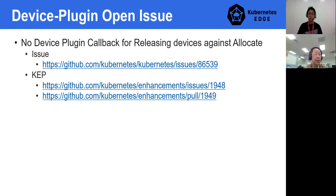Do we have everything we need for device plug-in? The answer is no. There is an open issue for device plug-in which originally comes from our use case. Edge devices are way more complicated — some devices are not as simple to manage with open/close but require more specific operations to release the resource. Device plug-in currently does not have such a callback interface to release the device resource, so we have been working with the community to support this requirement in the mainline. If you are interested, please take a look at the KEP and leave some feedback and comments.